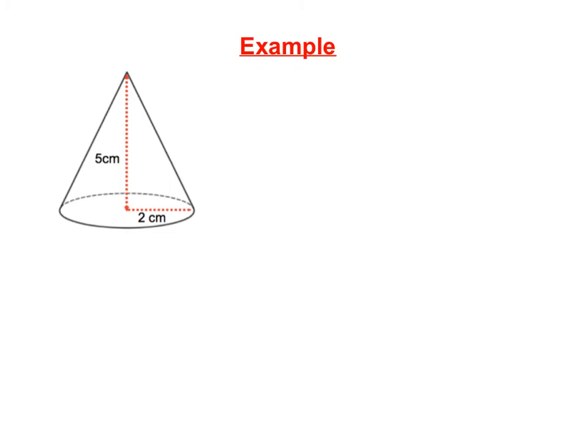For our last example here, we have another cone, but notice in this cone, we have something different. This five centimeter mark, that is actually the height of our cone. It's the distance from the vertex of our cone to the center of our circle. Okay, in order to find the lateral area, we need to take pi times R times L. But in this picture, we don't have L. L is the slant height. It's the edge.